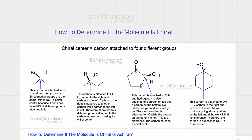Finally, let's take a look here. This carbon is attached to an oxygen, a carbon, a carbon, and a carbon. One of these carbons is only attached to three hydrogens, but the other carbons are attached to more carbons. The carbon to the left is attached to another carbon, and the carbon to the right is attached to another carbon — but as we continue, they fall on the same carbon. So going left and right, there is no difference, and therefore this carbon is not a chiral center.